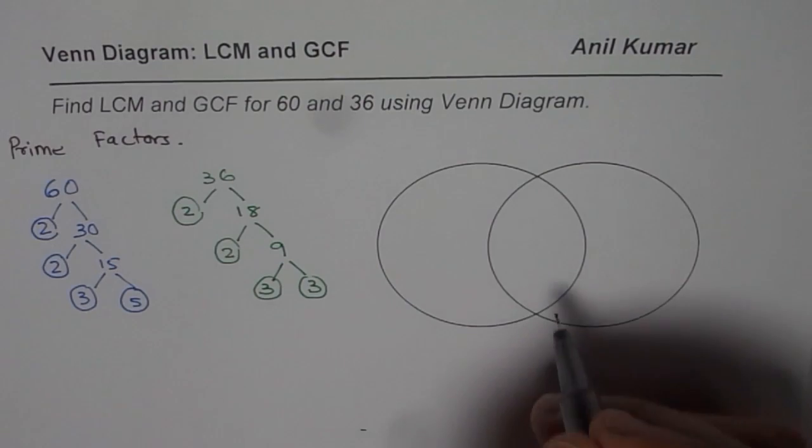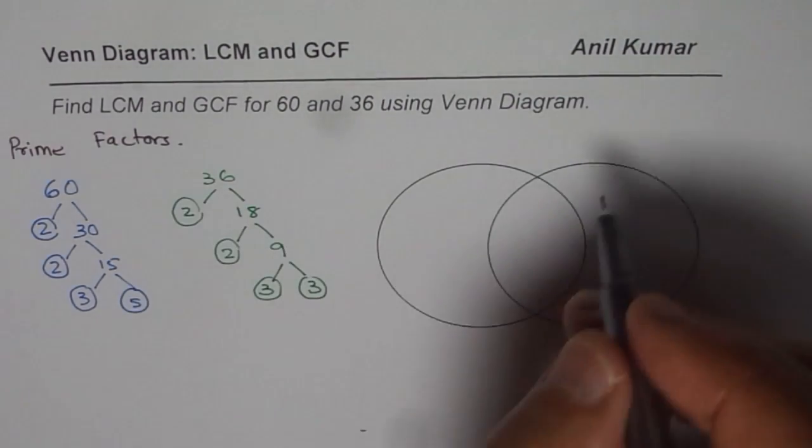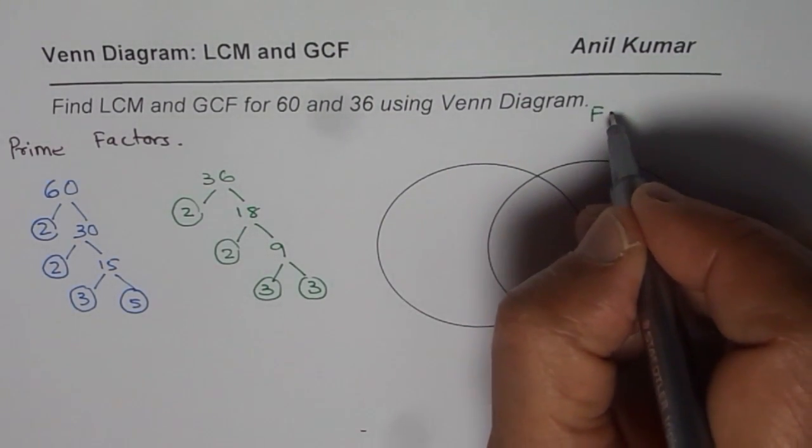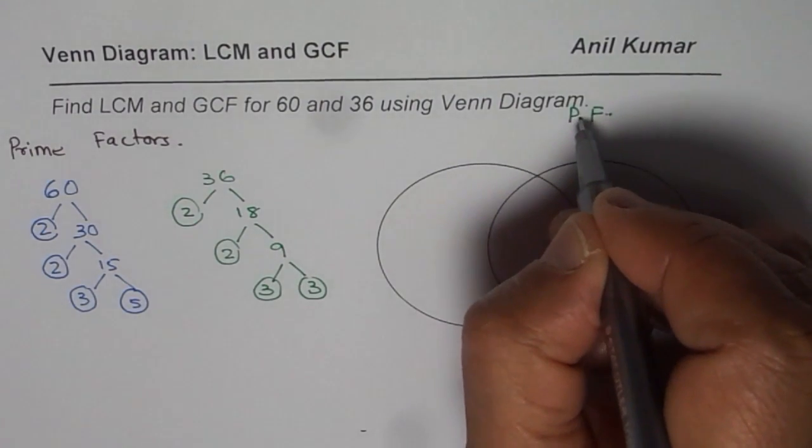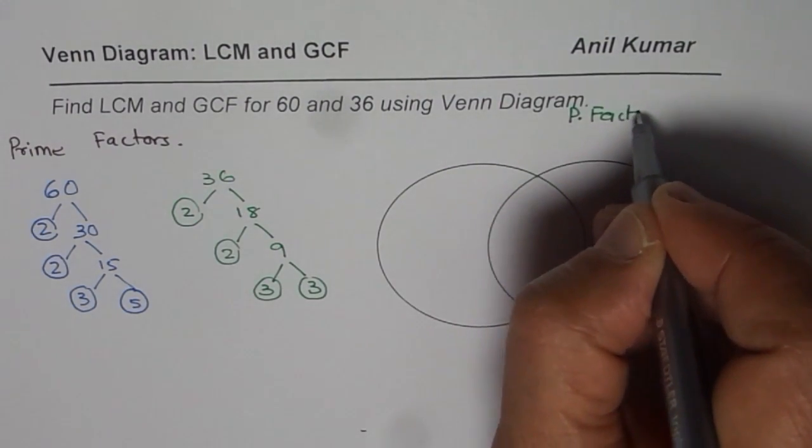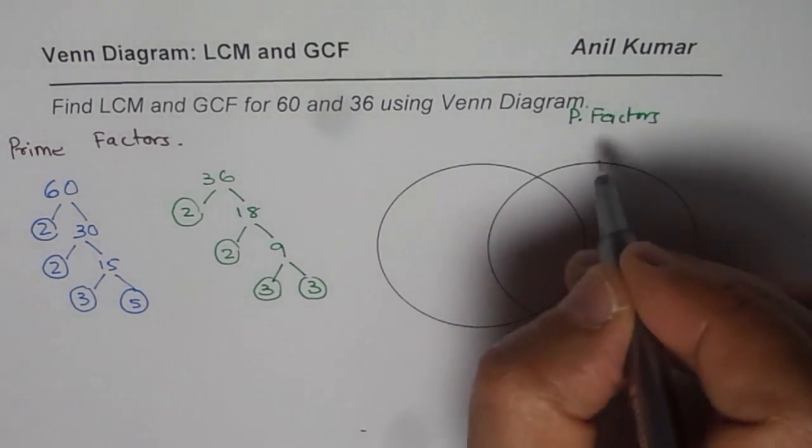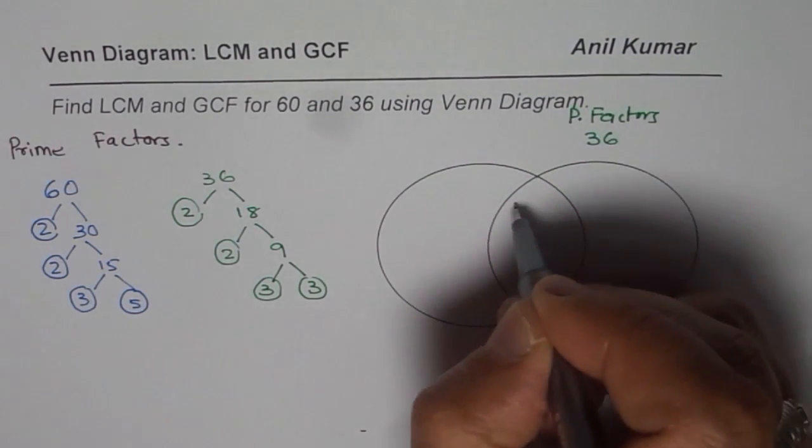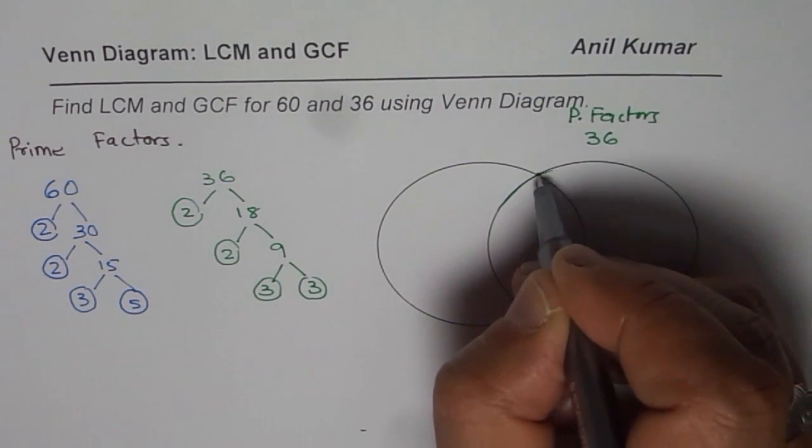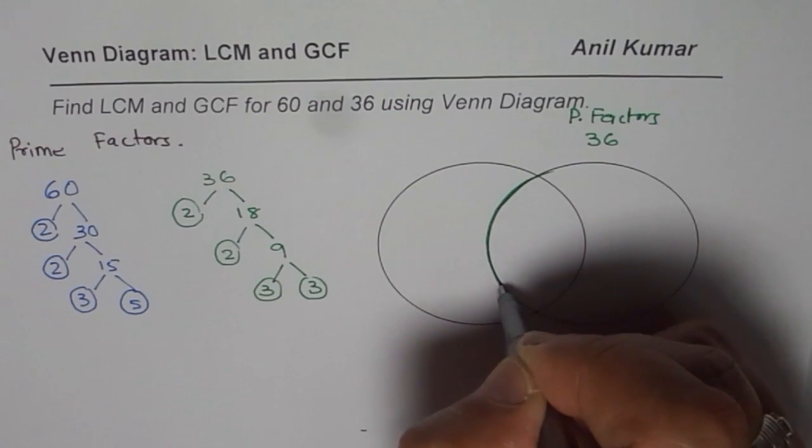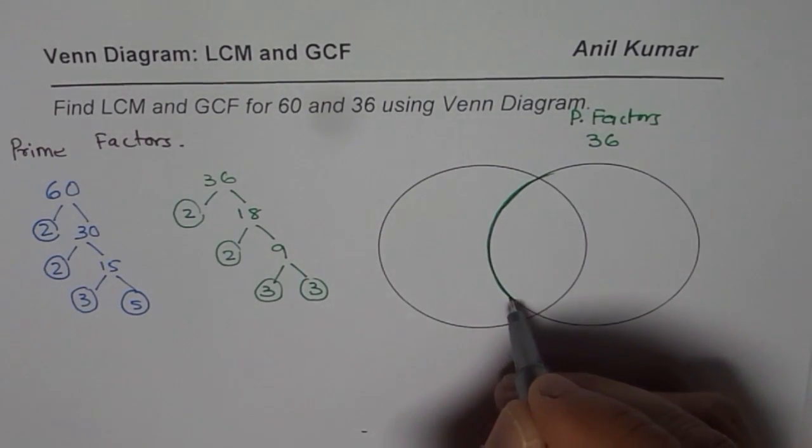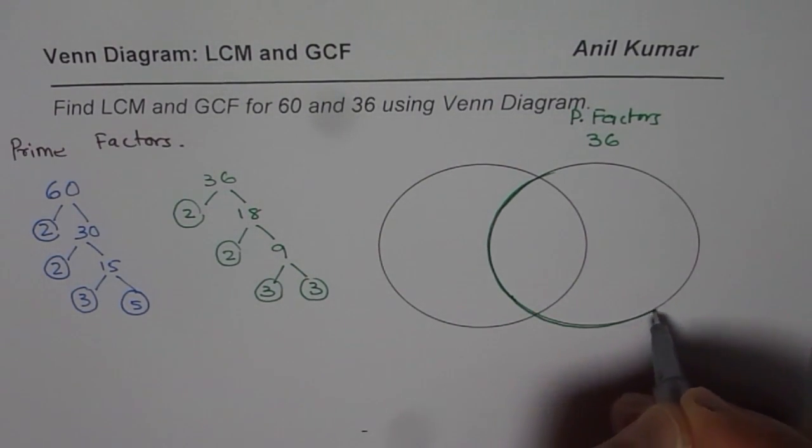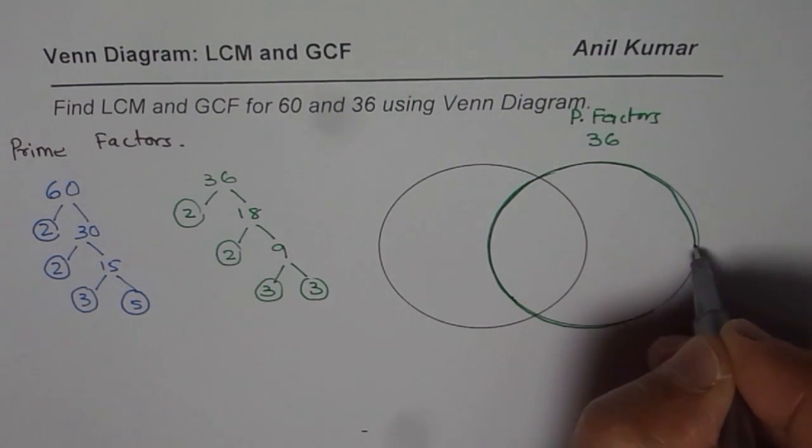Now idea of using the Venn diagram is we will write factors, I should say prime factors. Let me write prime factors of both. In this circle we will write prime factors of 36. So this is my green circle. So this is what prime factors of 36.